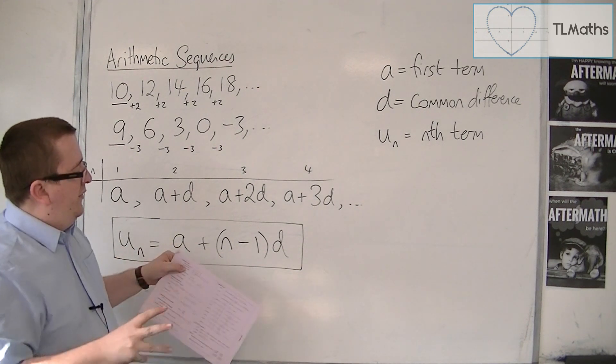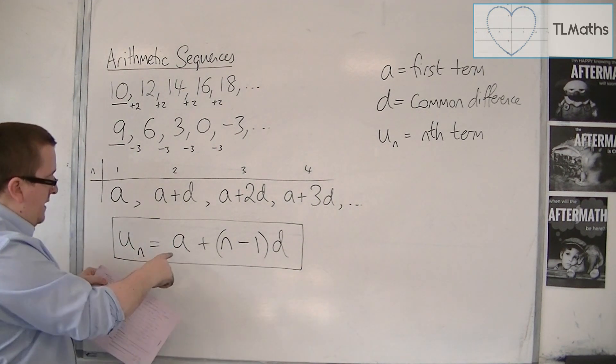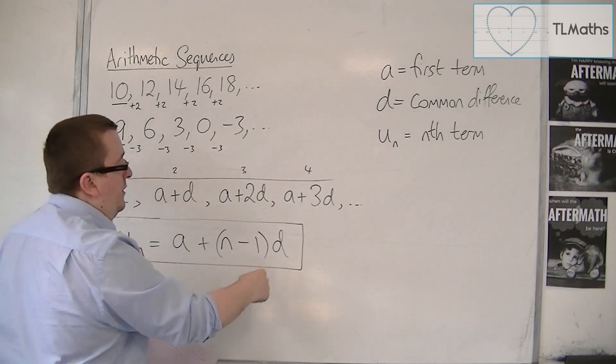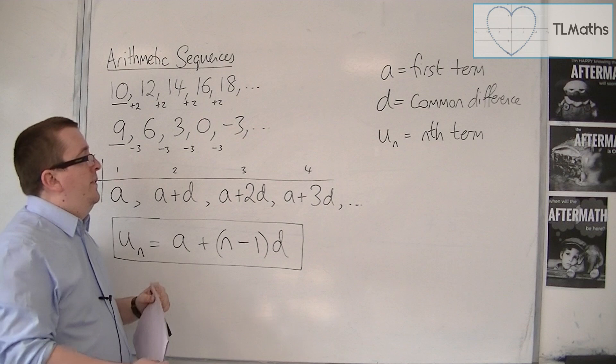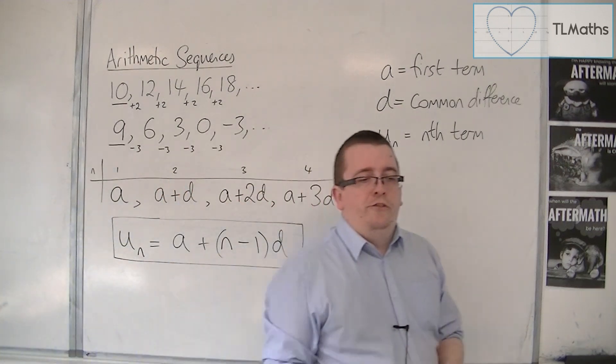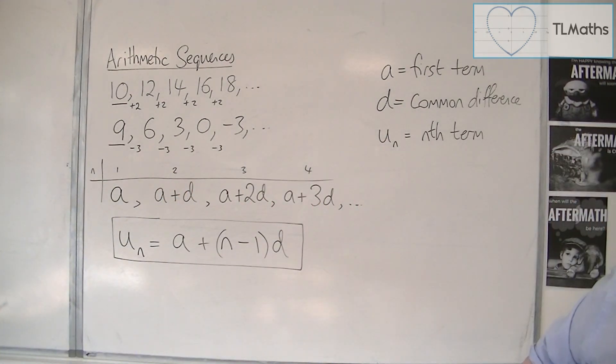the last or nth term is Un equals A plus n minus 1 D. So it's given to you like you are with the majority of the formulas that you need for this section.